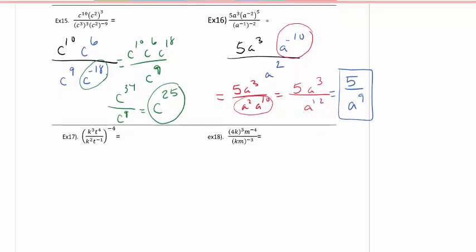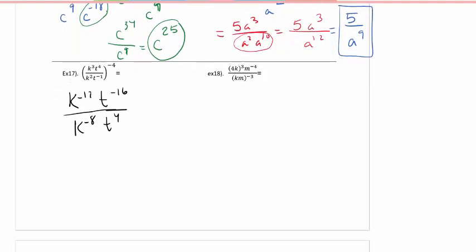Last two for this section. And they do get a little more challenging. It is your choice on number 17. You can simplify inside first which is really what I would do. Or you can distribute the exponent first. It is your choice. On my paper if you print it out I actually simplified inside first. But just to give you other options I am going to walk us through distributing first. So I am going to get k to the negative twelve, t to the negative sixteen, k to the negative eight, t to the fourth. I am going to distribute.